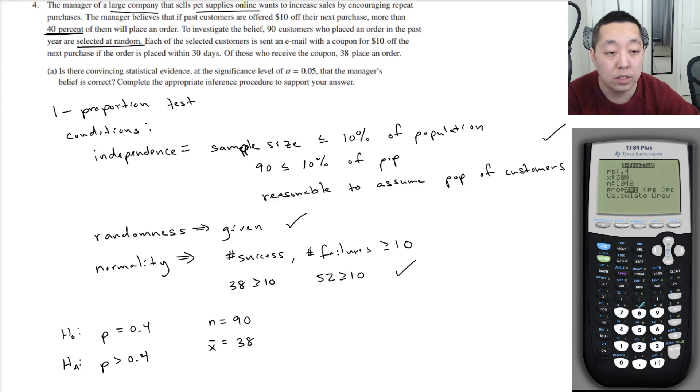X is 38. N is 90. And we care about whether it's greater than p0. And we're going to calculate.